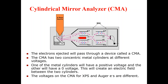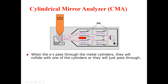Here you can see in this diagram that when the electrons pass through the metal cylinders, there are two possibilities. The first possibility is that the electron will collide with one of the cylinders. The other possibility is that the electrons will just pass straight through and move along their path towards the detector, which we have at the end of the CMA.